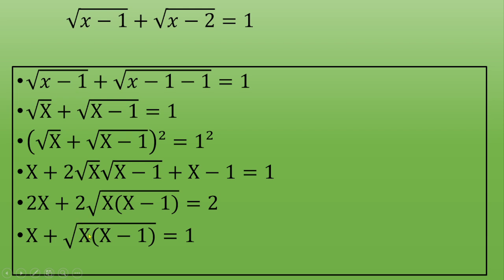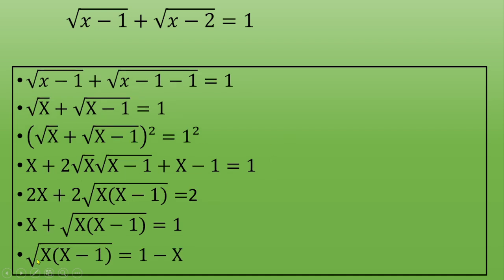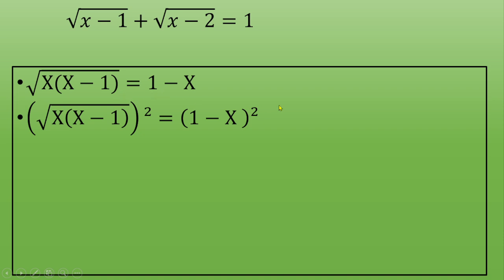Now you square both sides again, and on the right you apply the remarkable identity (a minus b)² = a² minus 2ab + b². This gives capital X times (capital X minus 1) on the left, and (1 minus capital X)² on the right.